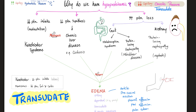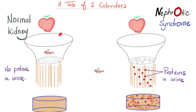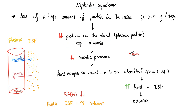Diffuse proliferative glomerulonephritis is nephrotic and nephritic. If it's nephrotic, you're losing protein in the urine and you can get edema. A normal kidney doesn't let proteins through, but a nephrotic kidney does — it lets protein through. When you lose protein in the urine, you lose your oncotic pressure, hence edema.